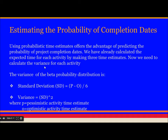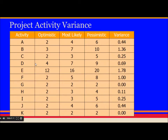Now, estimating the probability of a completion date: using probabilistic time estimates offers the advantage of predicting the probability of a project completion date. We have already calculated the expected time for each activity using three time estimates. We now need to calculate the variance of each activity. The variance of the beta distribution — standard deviation is calculated as pessimistic minus optimistic time divided by 6, and variance is that standard deviation squared.